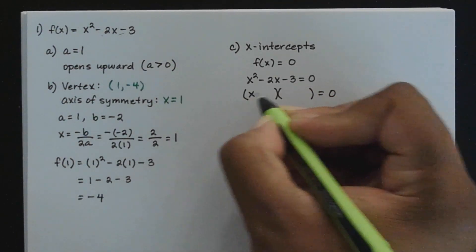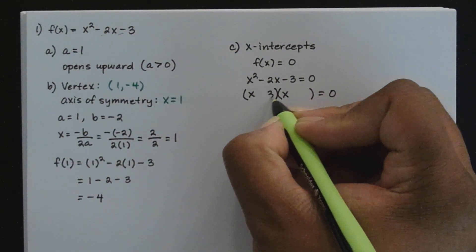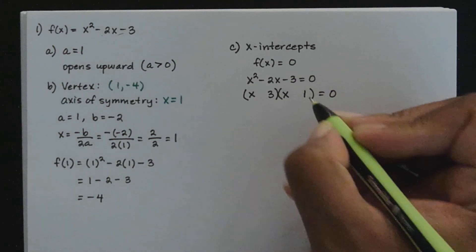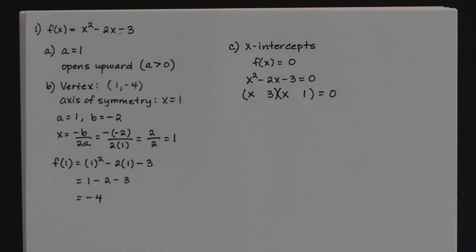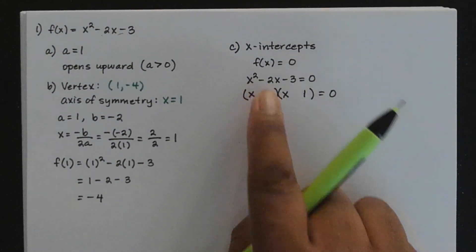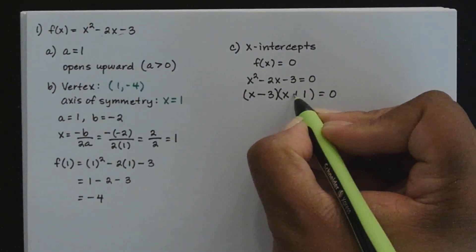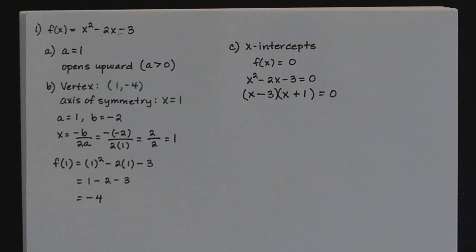So x-squared breaks up as x and x. We need factors of negative 3 that would give a minus 2x as a middle term. The only factors of 3 would be 3 and 1. Since the middle term is a minus, the larger of the two factors takes the sign of that middle term. The larger is 3, and the middle term is a minus, so the 3 has to be minus and the 1 must be plus. So we have x minus 3 times x plus 1 equals 0.